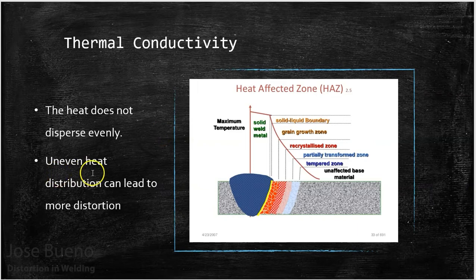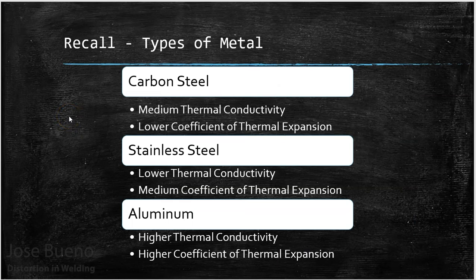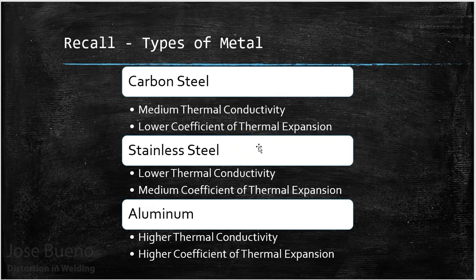Uneven heat can lead to more distortion, and we'll talk about that more in a moment. To recap: carbon steel has a medium rate of thermal conductivity and is on the lower end of thermal expansion. Stainless steel is on the lower end of thermal conductivity and in the middle for thermal expansion — it expands more than carbon steel but not as much as aluminum. Aluminum is on the higher end of both categories — it disperses heat better and expands more than the other two.